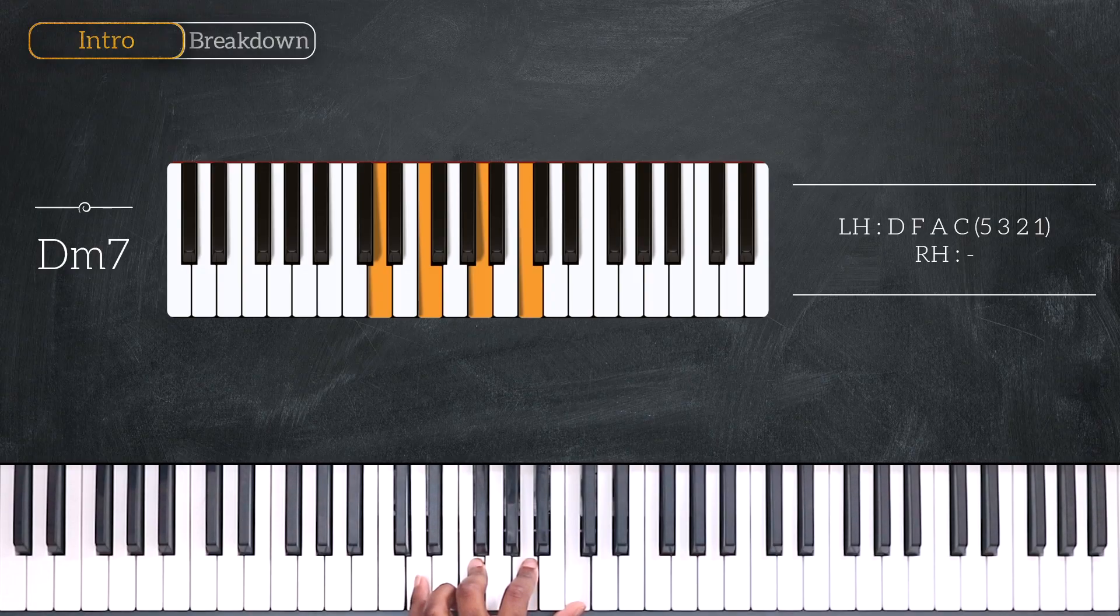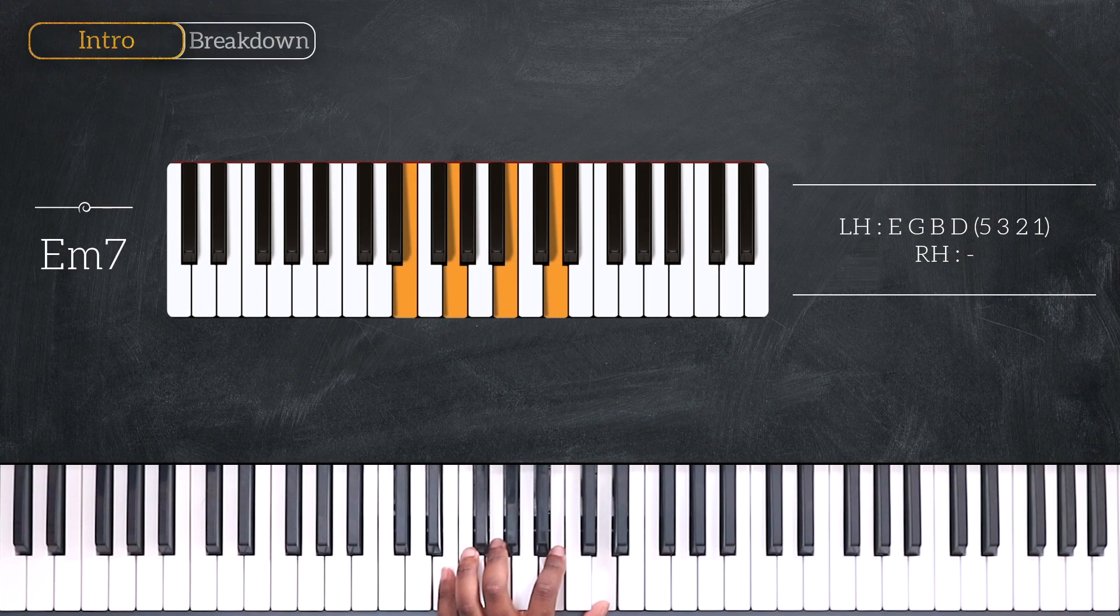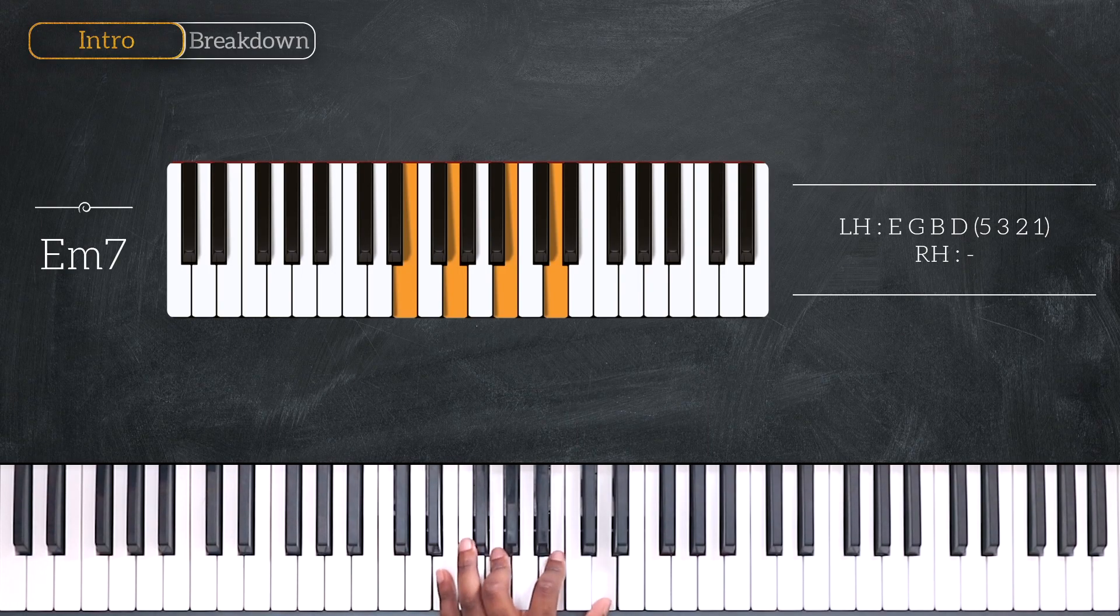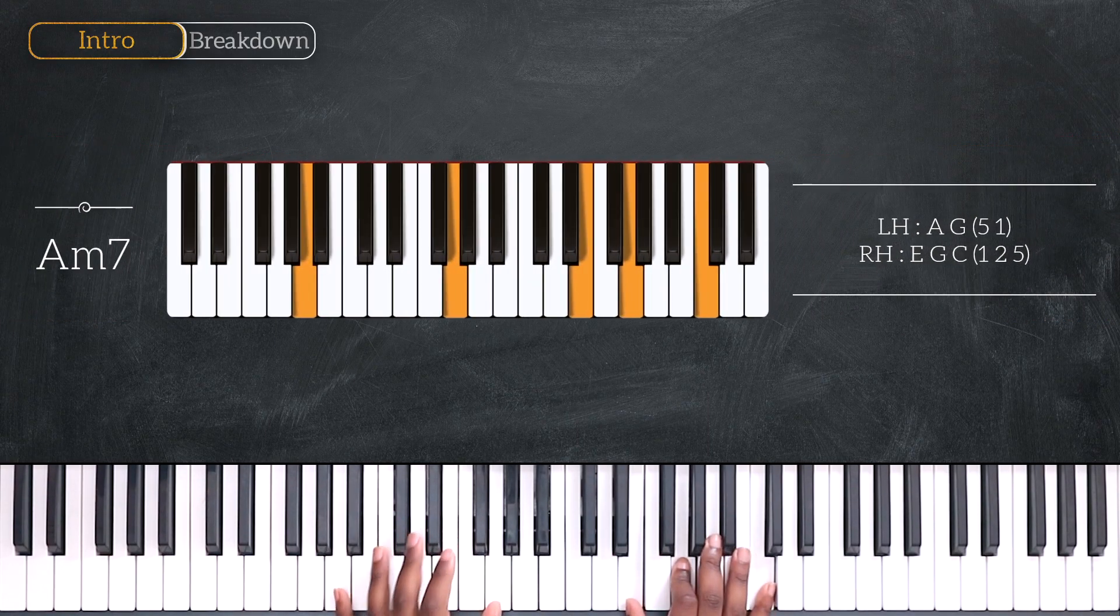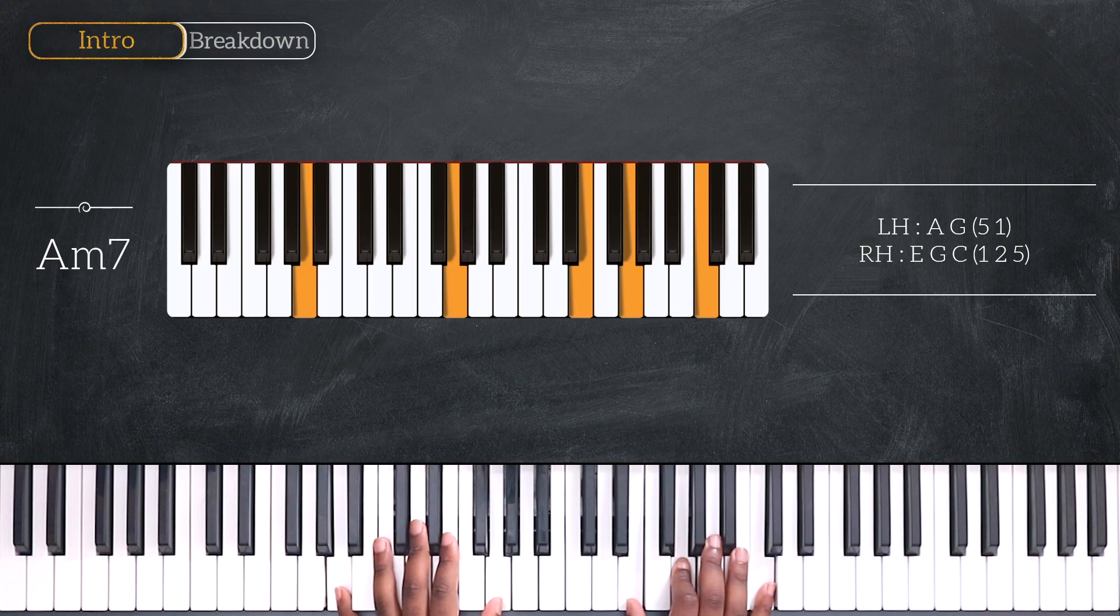And then we're going to go up by a whole step to play E minor 7. That's E, G, B and D. After that, we have A minor 7. A and G. E, G and C.